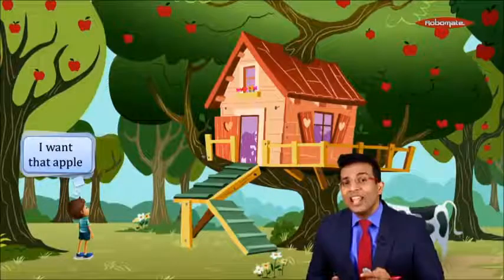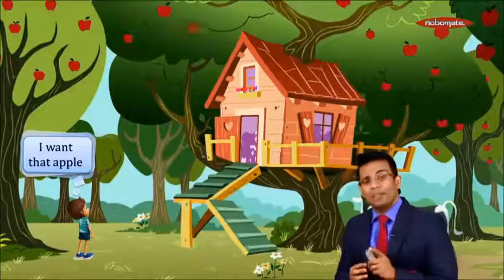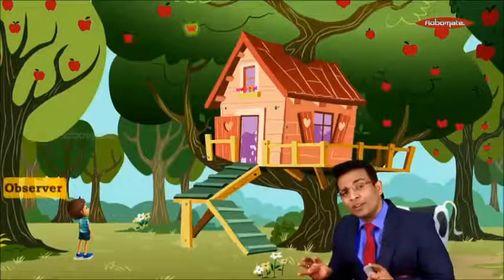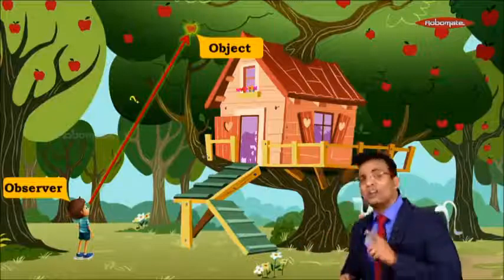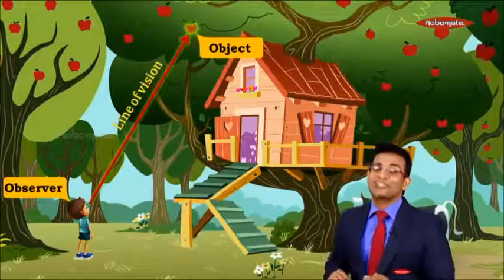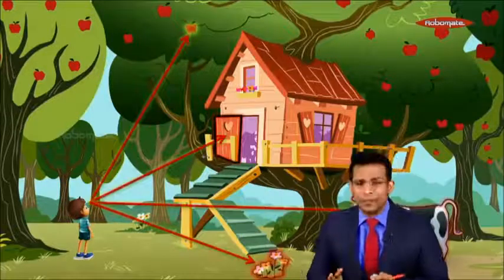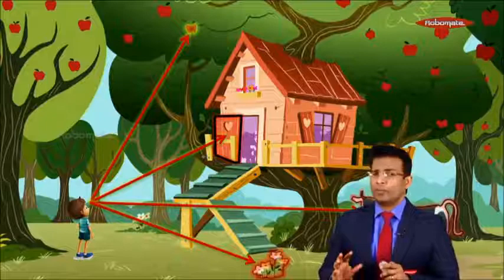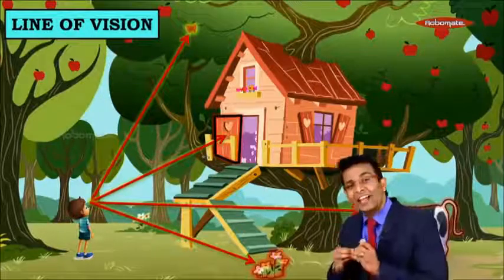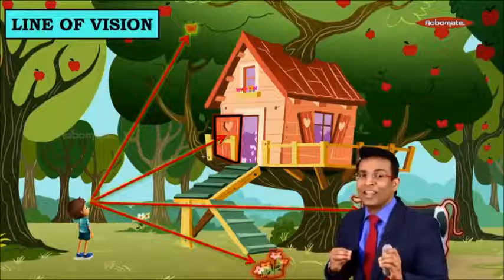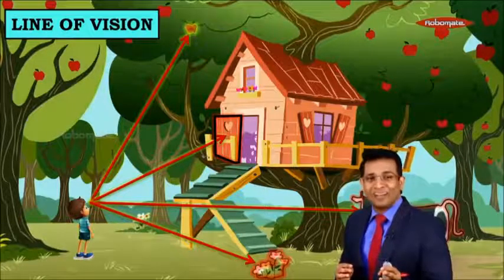Raj is saying he wants that apple on the tree. He is the observer and the apple is the object. The straight line connecting his eye to the apple is the line of vision. So wherever an observer observes an object, the line connecting his eye to the object is called the line of vision. That is the first concept, and it is very simple.